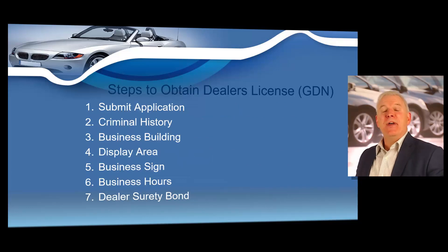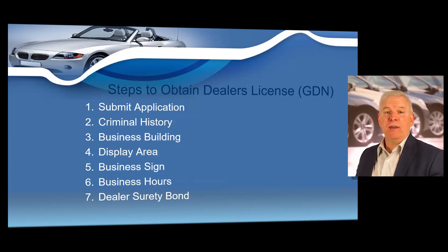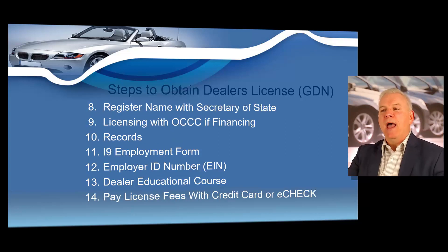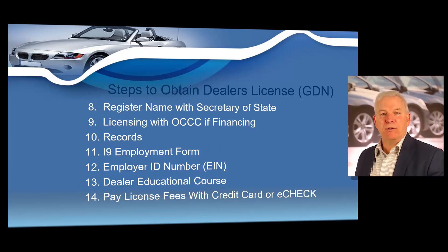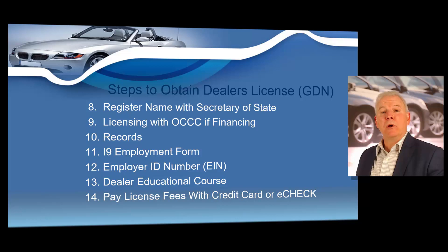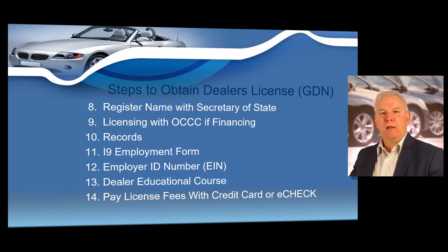Next, I want to cover the steps required to obtain a General Distinguishing Number — your dealer's license. We're going to cover the entire process, including submitting your application, criminal history, business building requirements, display area requirements, your sign and hours, the state's dealer surety bond requirements, registering your name with the Secretary of State or the county, licensing with OCCC if financing, records, your mandated I-9 employment form, your employer identification number, the dealer educational course, and how to pay your dealer license fees — either by credit card or e-check.